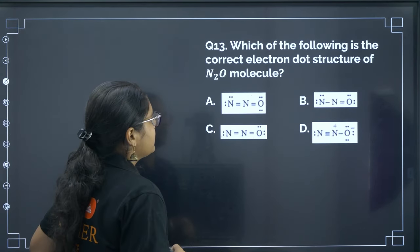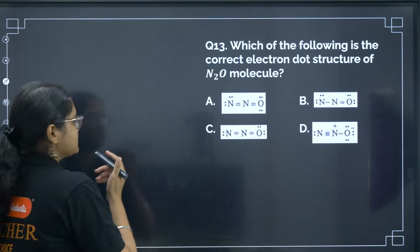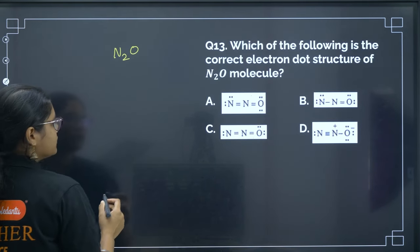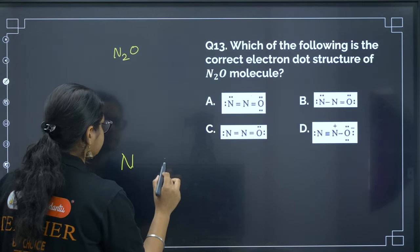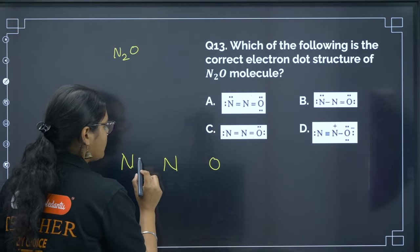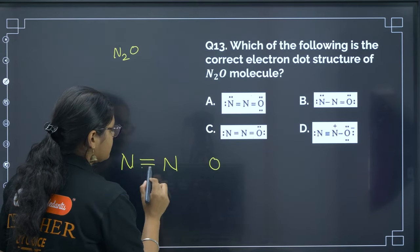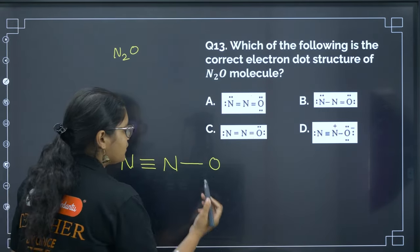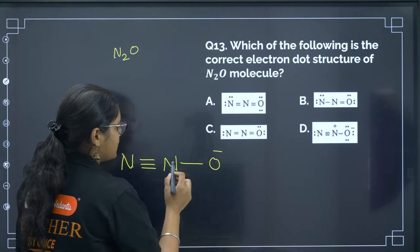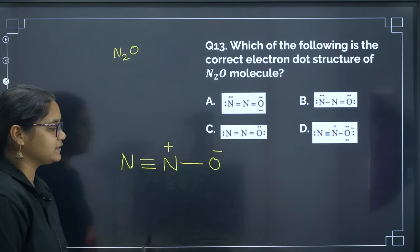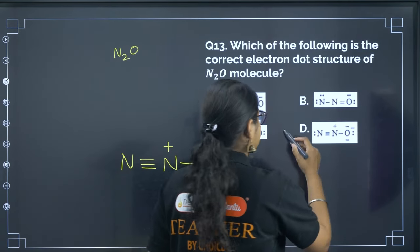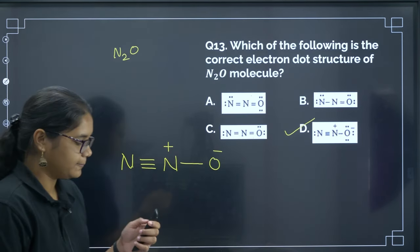Next: which of the following is the correct electron dot structure of N2O? We have two nitrogen atoms and one oxygen. There can be 3 bonds between the two nitrogen atoms and 1 bond at the end. Oxygen has more electrons so it carries a negative charge; nitrogen carries a positive charge. The correct answer is option D.